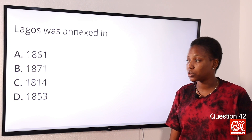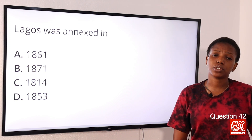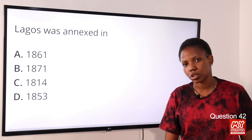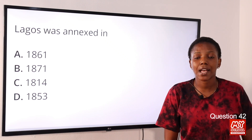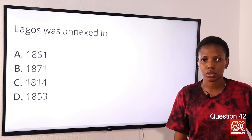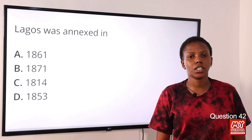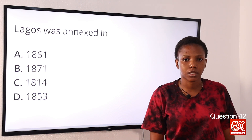Question 42: Lagos was annexed in — Option A: 1861. Option B: 1871. Option C: 1814. Option D: 1853. The answer is Option A, 1861. The British annexed Lagos as a colony in 1861.